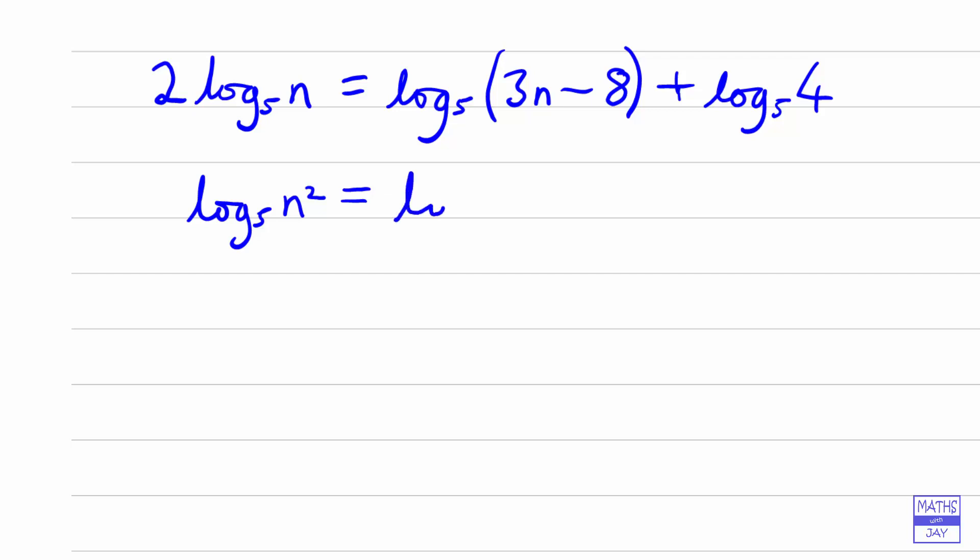And now the right hand side, we want to write this as log to base 5 of something. So all we need to do is multiply together the 4 and the 3n minus 8. So we've got 4 times 3n minus 8 inside that log.